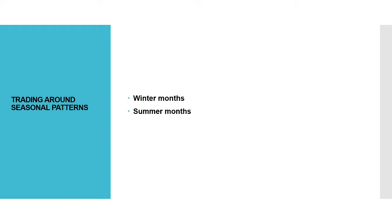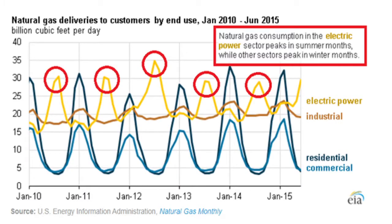In summer months, there is increased consumption due to increased electricity demand. The chart denotes the thermal spike with red circles, while the winter spikes are shown where the blue peaks have occurred around January of each year.